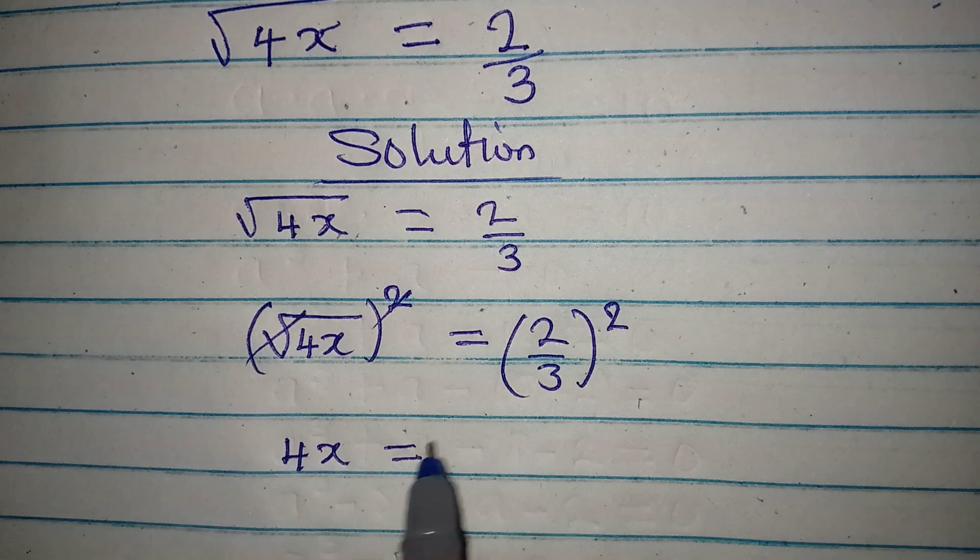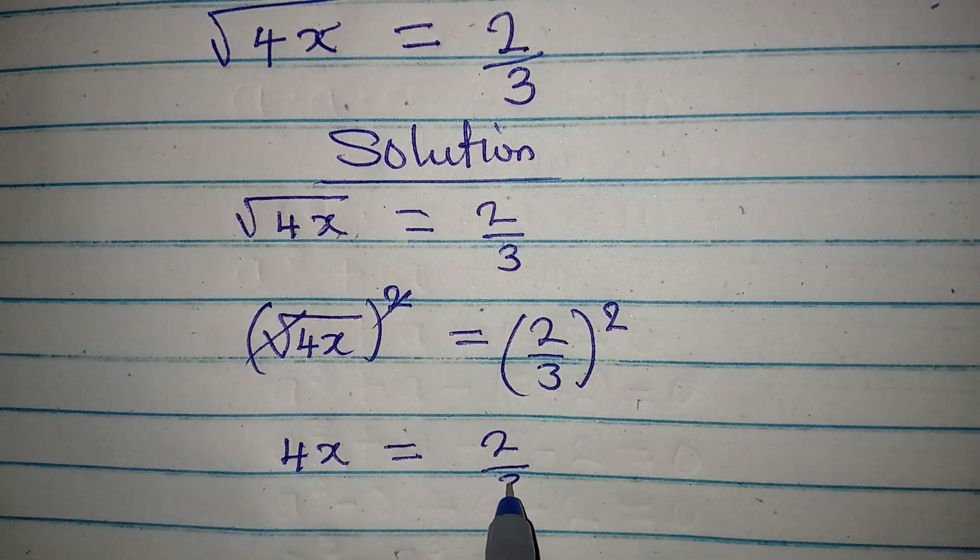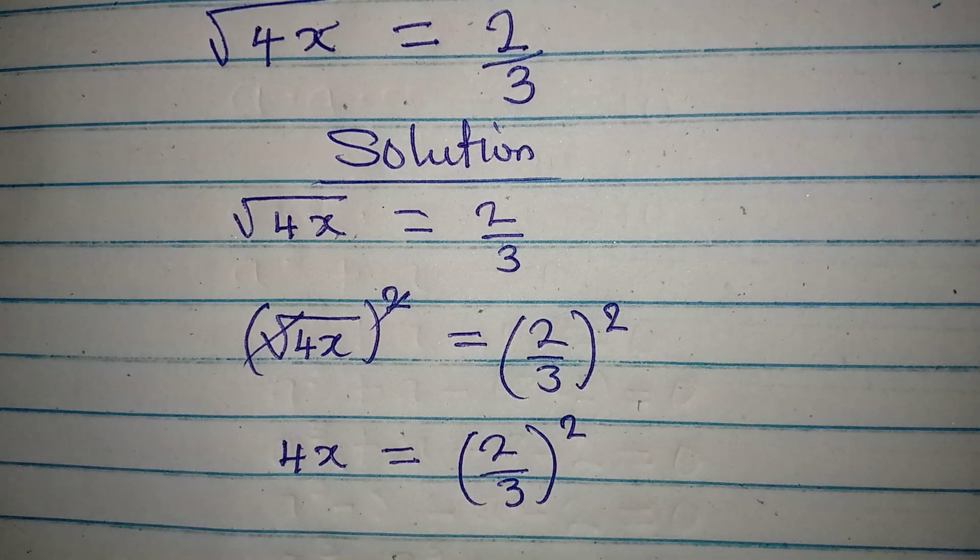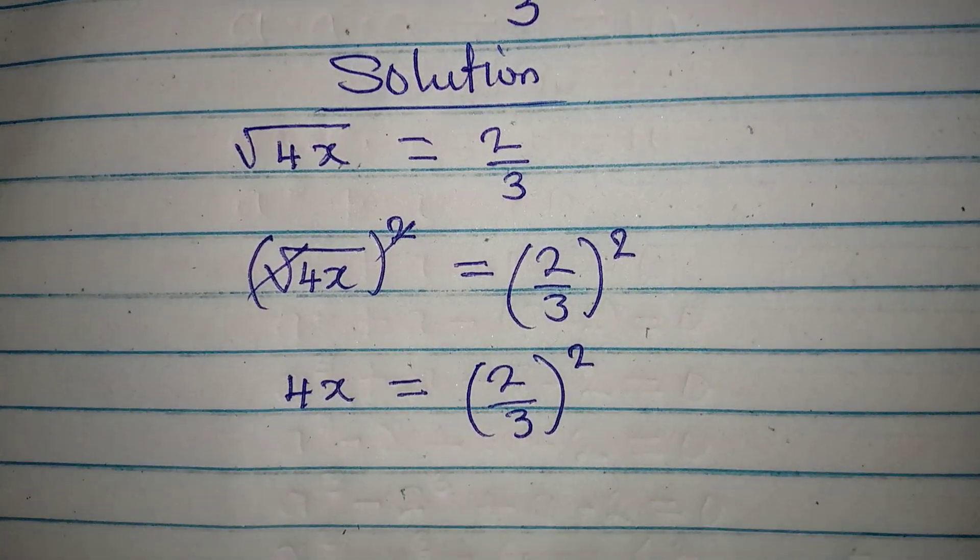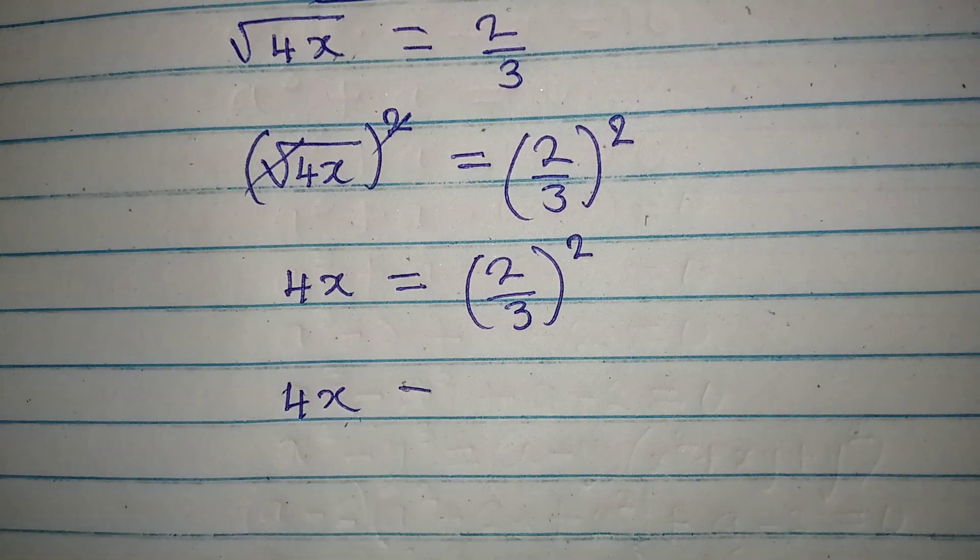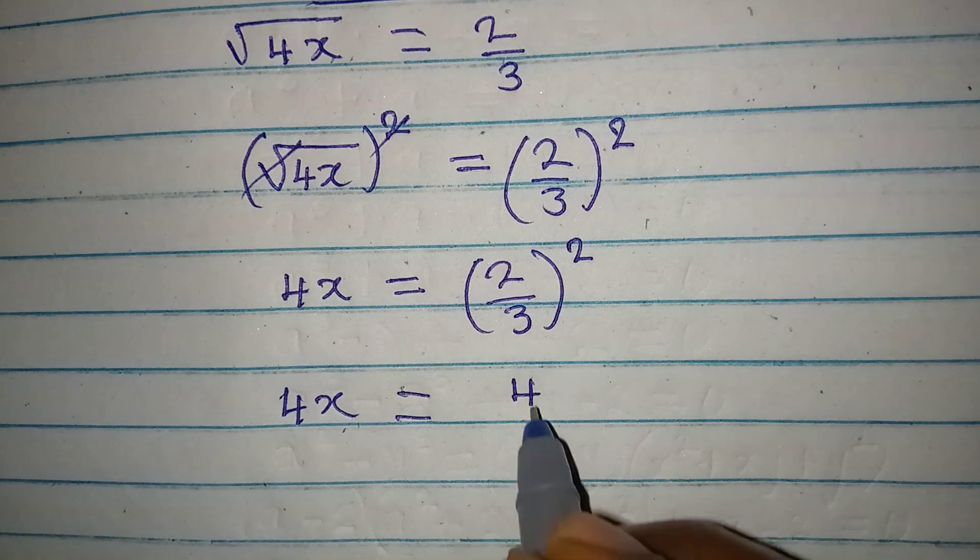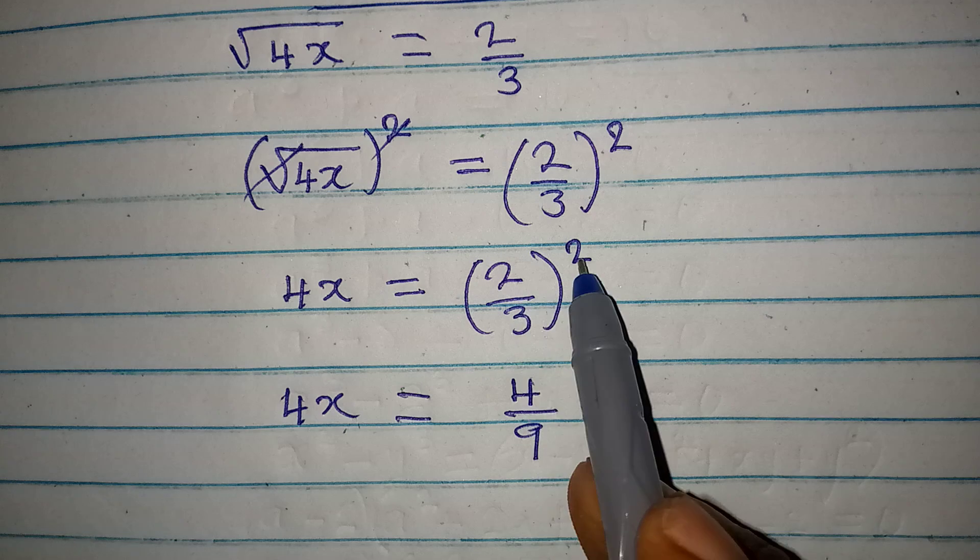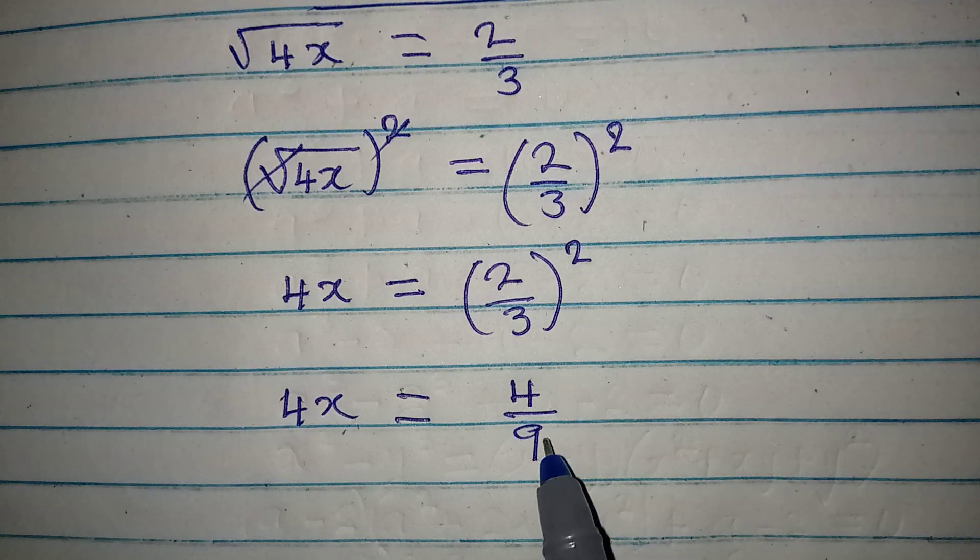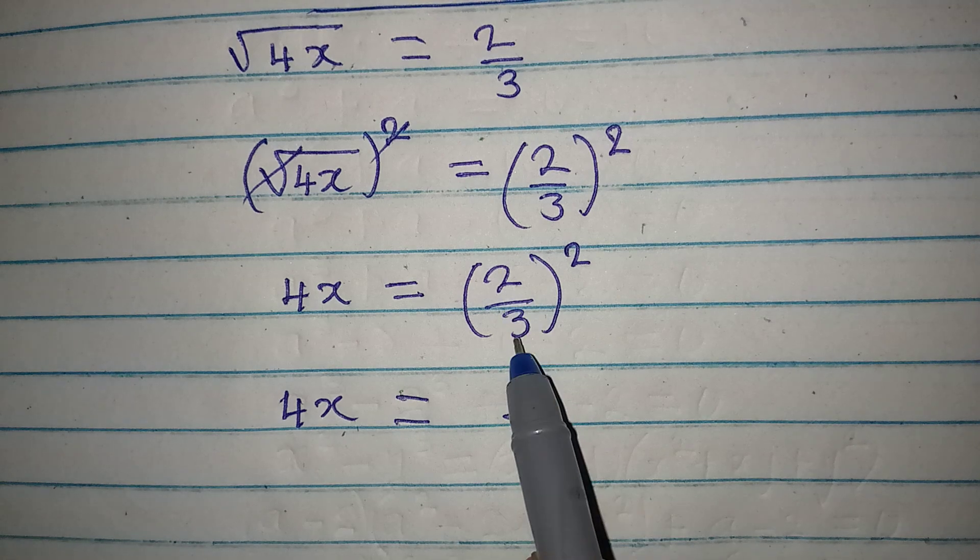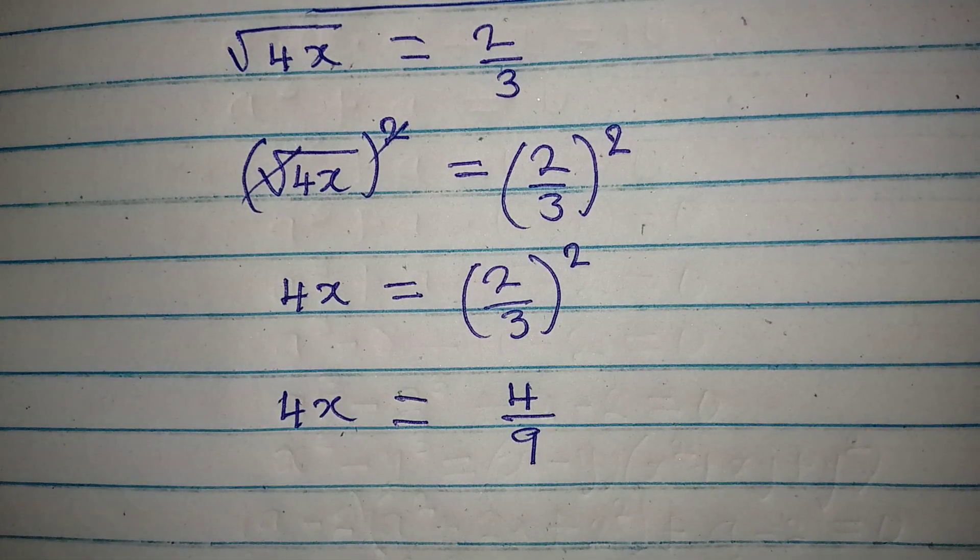And then 2 over 3 to the power of 2, this implies 4x here is equal to 4 over 9, because 2 squared is 4 and 3 squared is 9. The square is for both of the numbers, the numerator and the denominator.